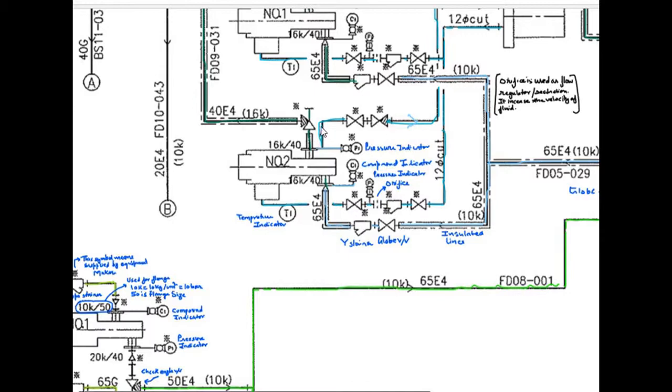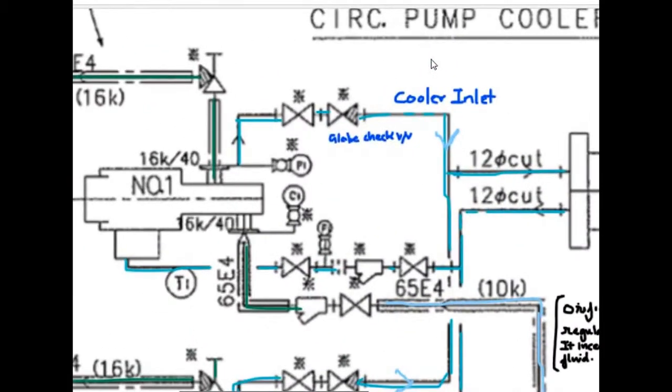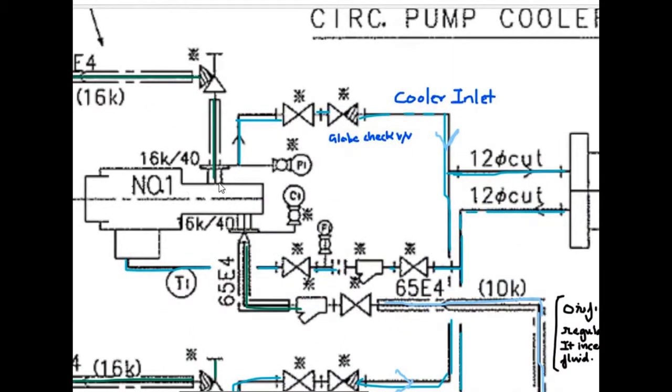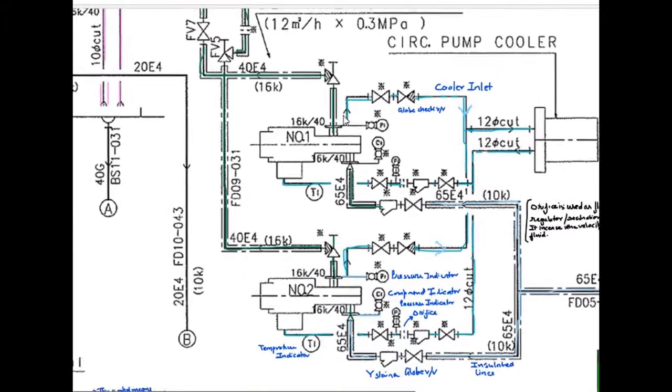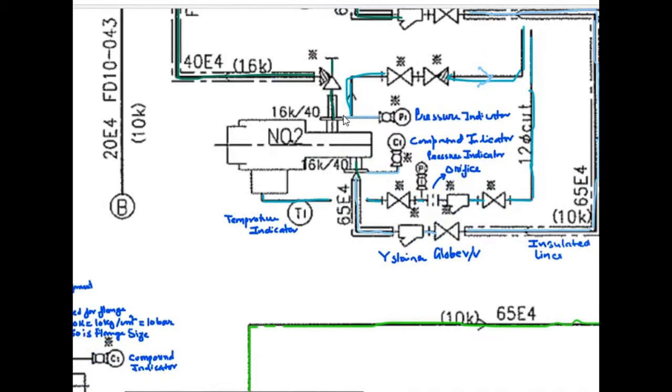One line is going from discharge side to the cooler, and other is coming to the circulating pump. Means, this cooler is cooling the circulating pumps. These two lines are there. You can see in the both pumps, we have globe check valves. Means, the outlet from the pump is going to the cooler through globe check valves. Now, you can see in the suction side, we have temperature indicator. Here, we can see the cooling is effective or not.